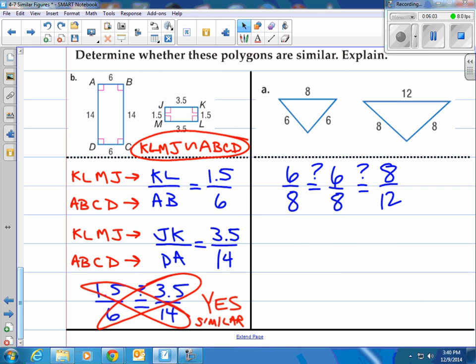Well, obviously 6/8 and 6/8 is the same, but guess what? 8/12 doesn't equal the same as 6/8. It's not 3/4. It's actually 2/3. So our answer is, these are not similar figures. These are not similar triangles.